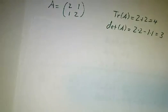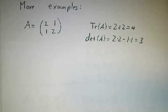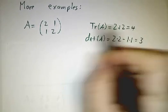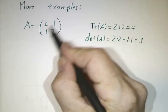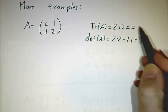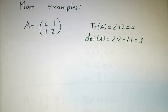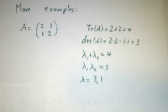Some more examples. Our favorite matrix (2 1; 1 2). The trace is 2 plus 2, that's 4. The determinant is 2 times 2 minus 1 times 1, that's 3. So whatever the eigenvalues are, they have to add up to 4, and they have to multiply out to 3. The only way to do that is if one eigenvalue is 3 and the other is 1.